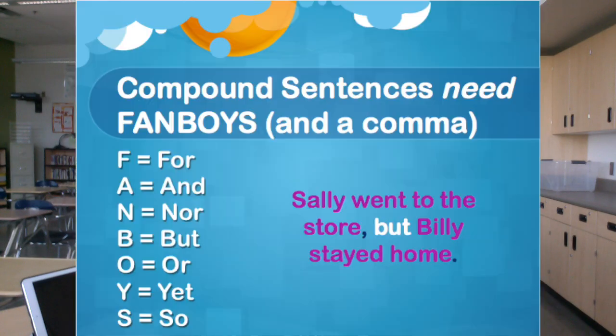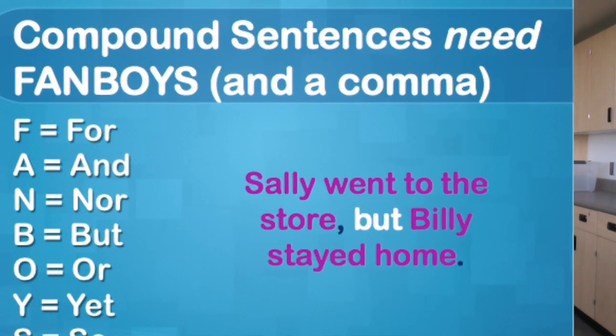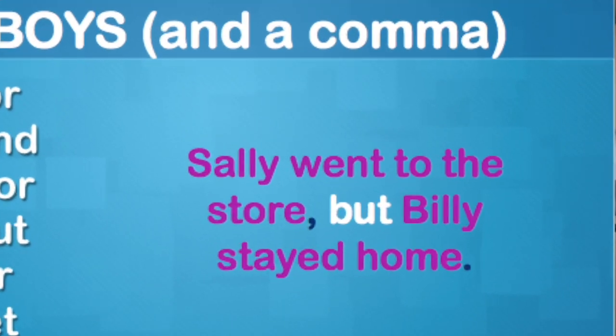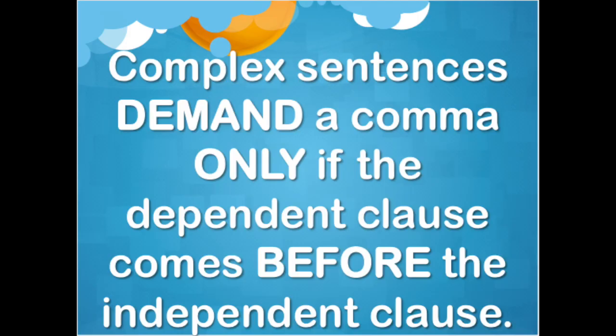The most important thing to remember with compound-complex sentences is that they must still follow the same rules as compound and complex sentences. You must put your comma before the coordinating conjunction as in compound sentences, and if you have a dependent clause before an independent clause, you still need a comma, just like in complex sentences.